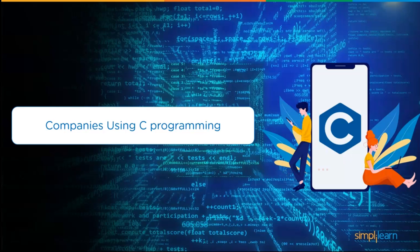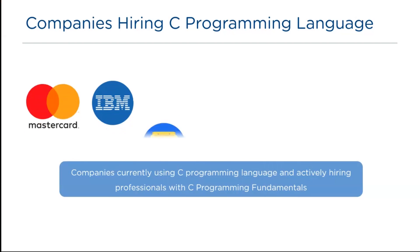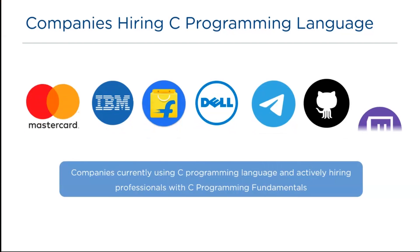Let's get into the companies using C and hiring software developers with the knowledge of C programming. We have MasterCard, IBM, Flipkart, Dell, Twitter, GitHub, and Twitch. The average salary of software developers in the United States of America is $97,763 US dollars per annum. In India, the average salary of C developers is 5 lakhs per annum.